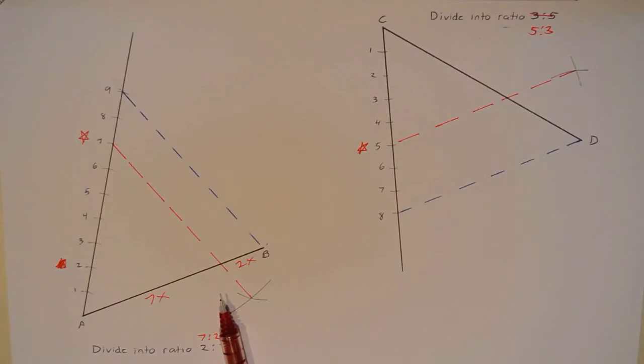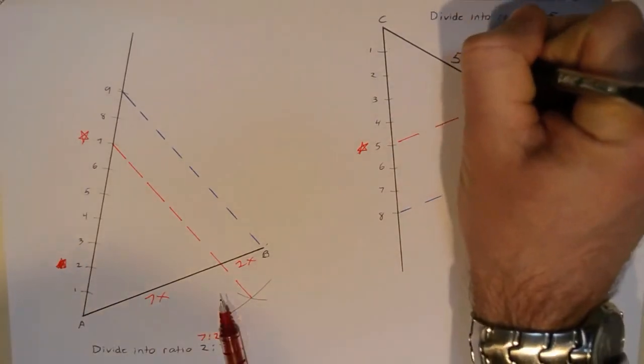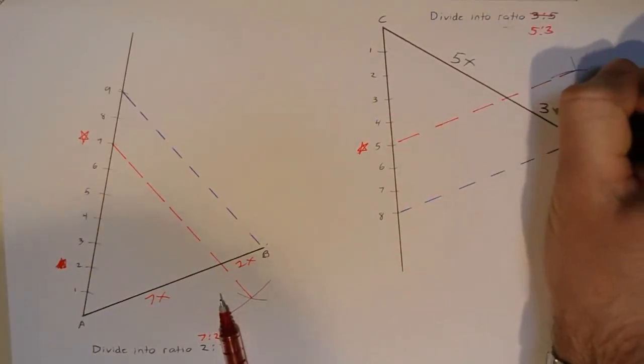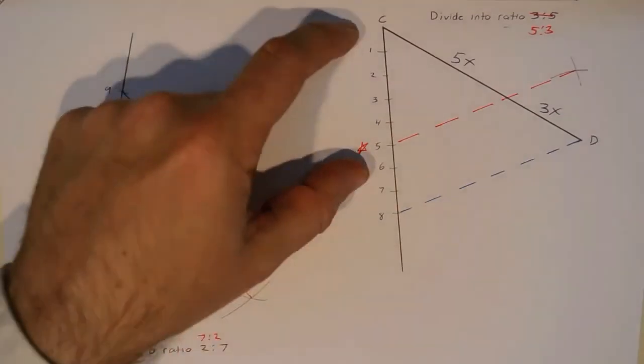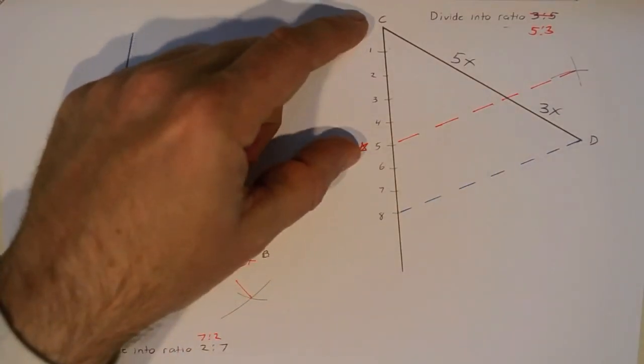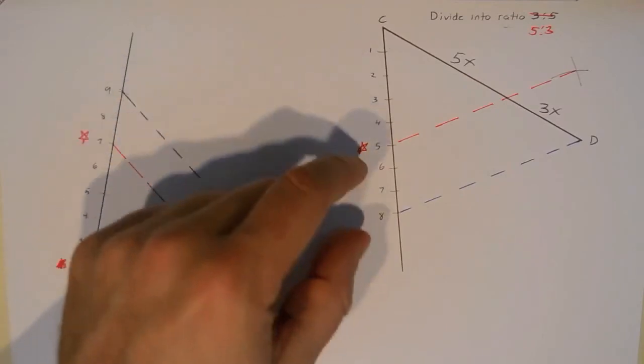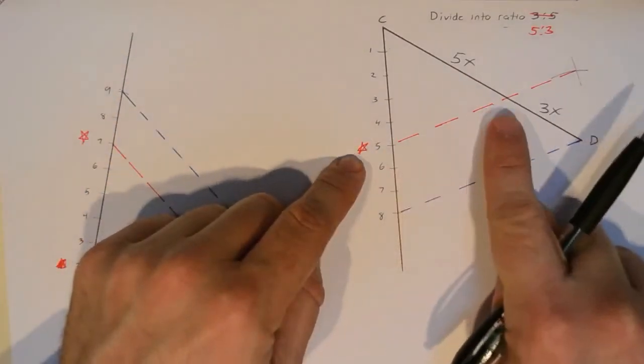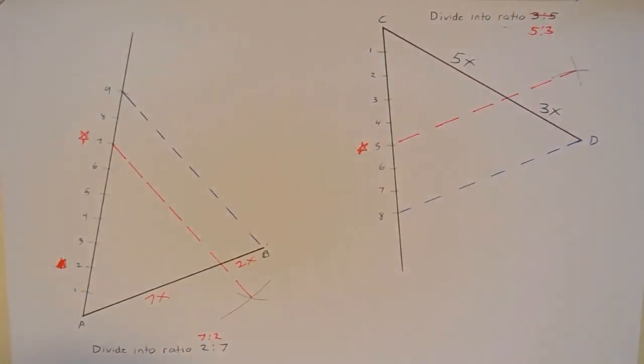And the important part of that line is right there, where it intersects the original CD segment. Because these pieces are now in the ratio of 5x to 3x. Because on the left-hand side of the triangle, I've got 5 congruent pieces here, 3 congruent pieces here. So that's my 5 to 3 ratio. This parallel line transfers that ratio over to that side.